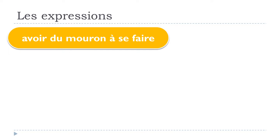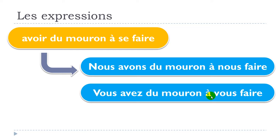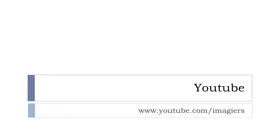Now for the plural forms: first person plural NOUS — NOUS avons DU MOURON À NOUS FAIRE. Second person plural VOUS — VOUS avez DU MOURON À VOUS FAIRE. And SE for the third person plural ILS and ELLES. Well, that's it — have a great day, au revoir et à bientôt!